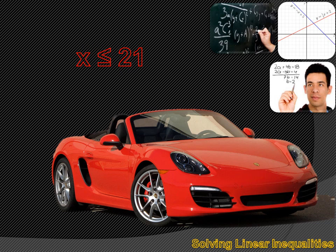This symbol is X is smaller than or equal to 21 — we just added a little equal sign below the less-than symbol, and now it reads X is smaller than or equal to 21. X may be larger than or equal to 21, or X just may be larger than 21.